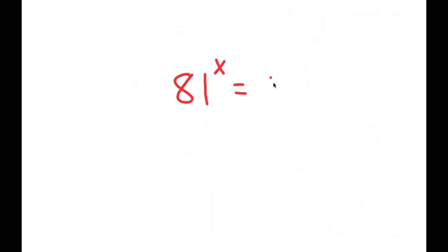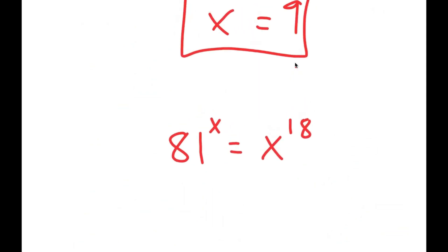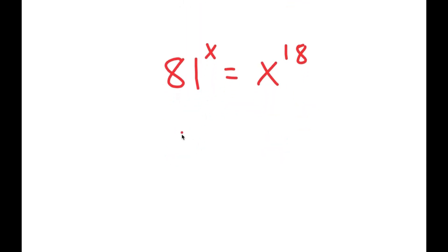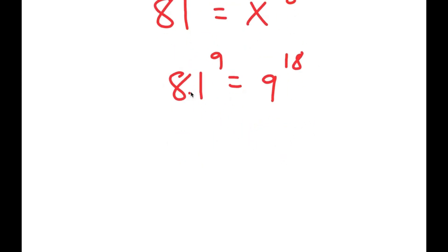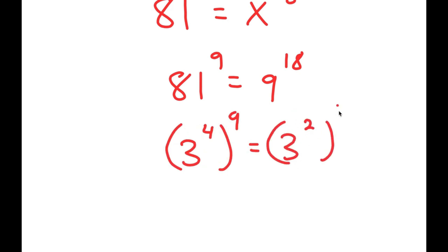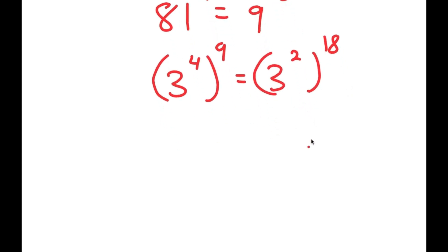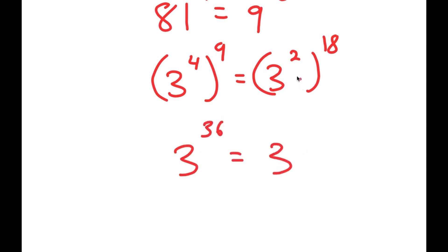We have 81 to the power of x equals x to the power of 18, and x equals 9. Plugging in 9, I get 81 to the power of 9 is equal to 9 to the power of 18. Now 81 is 3 to the power of 4, and 9 is 3 squared. So I get 3 to the power of 4 to the power of 9 equals 3 squared to the power of 18. Using the power rule, 3 to the power of 4 times 9 equals 3 to the power of 36, and 3 squared to the power of 18 also equals 3 to the power of 36. So this is correct.